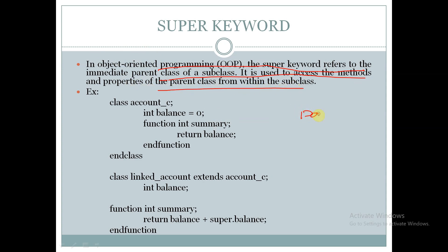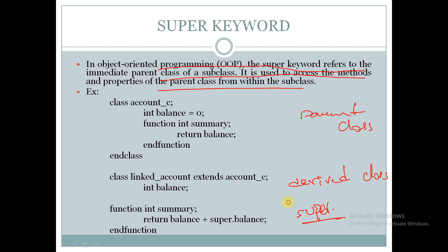We have already discussed that there are two types of classes: parent class and derived class. If the super keyword is used in the derived class, then it means it is referring to the parent class.